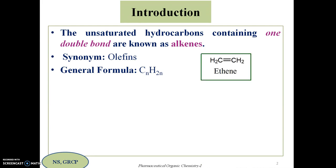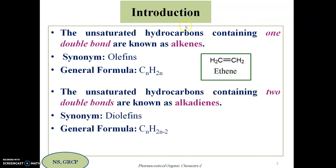The general formula for alkenes is CnH2n. Compared with alkanes (CnH2n+2), two hydrogens are lacking. So the general formula is CnH2n. This is the first member of the homologous series. Alkenes are unsaturated hydrocarbons having a double bond.